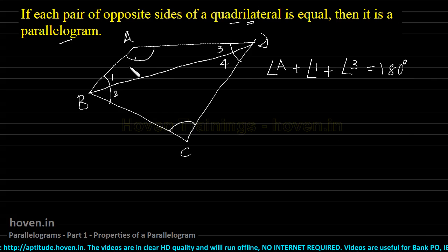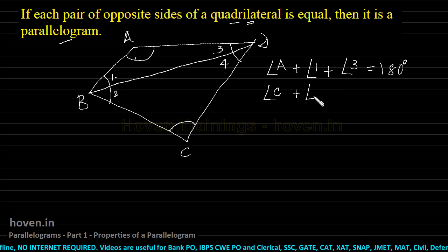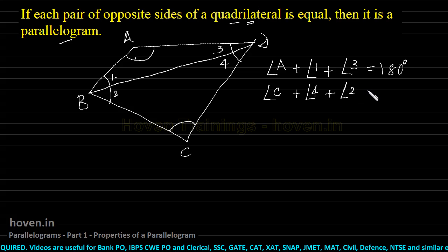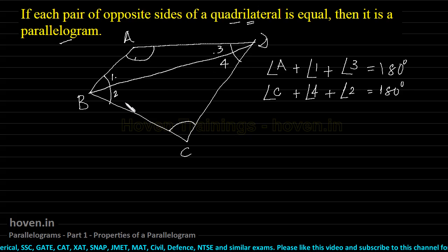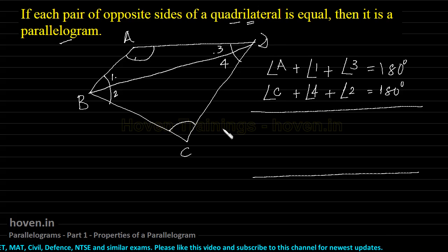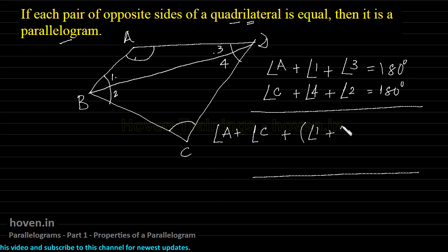...should be equal to 180 degrees. It is the sum of the interior angles of the upper triangle. Likewise, we can take the lower triangle. In that case, we can write angle C plus angle 4 plus angle 2 equal to 180 degrees — that is the sum of angle C, angle 4, and angle 2, which has to be 180 degrees. Now we can add them together: angle A plus angle C, and we can group angle 1 and 2 together, likewise group 3 and 4.